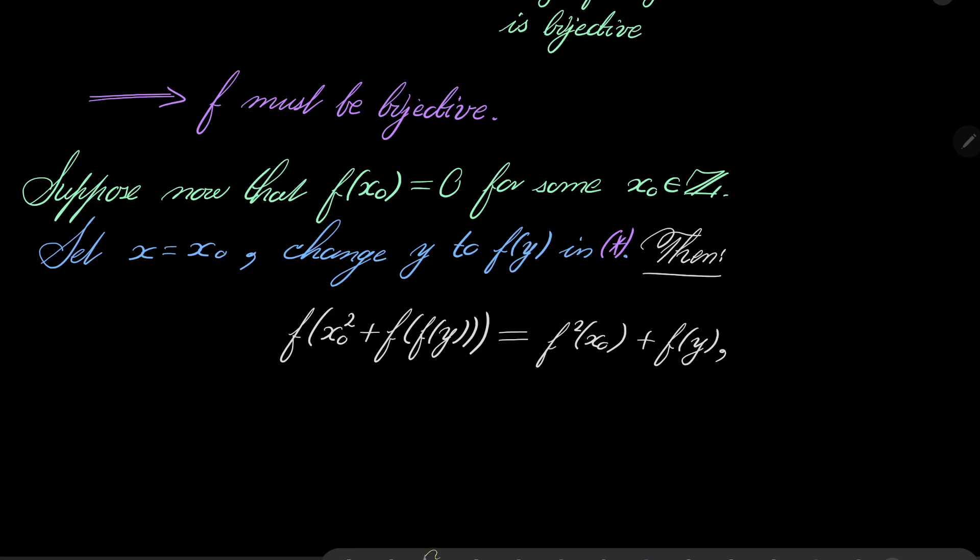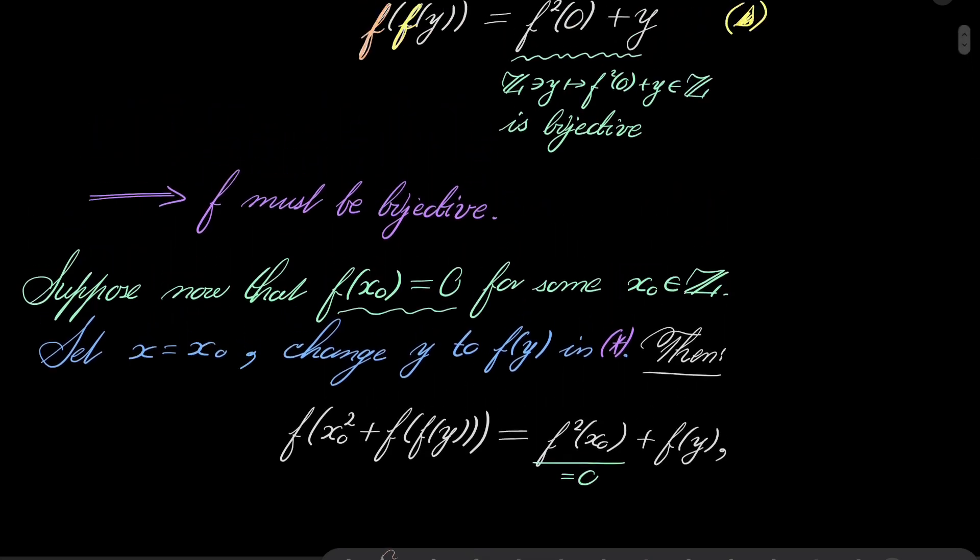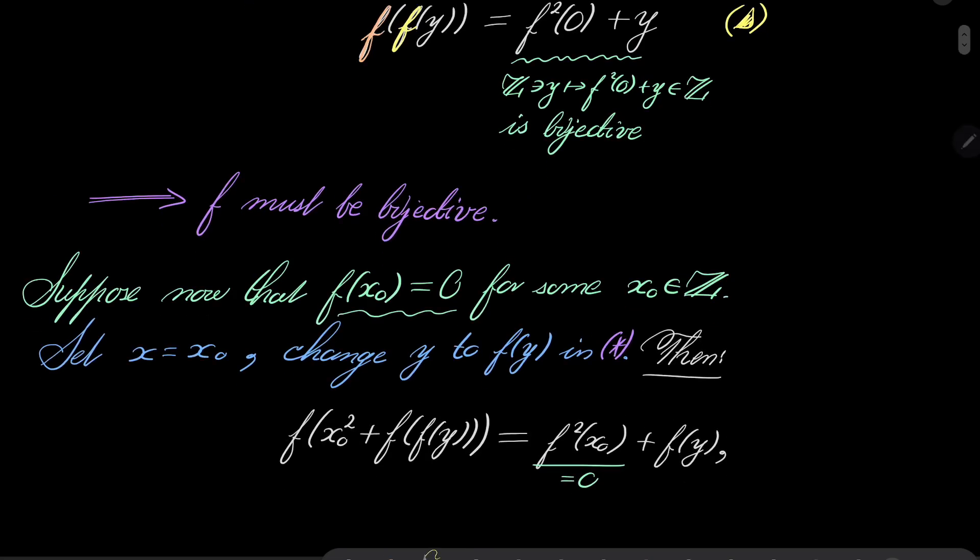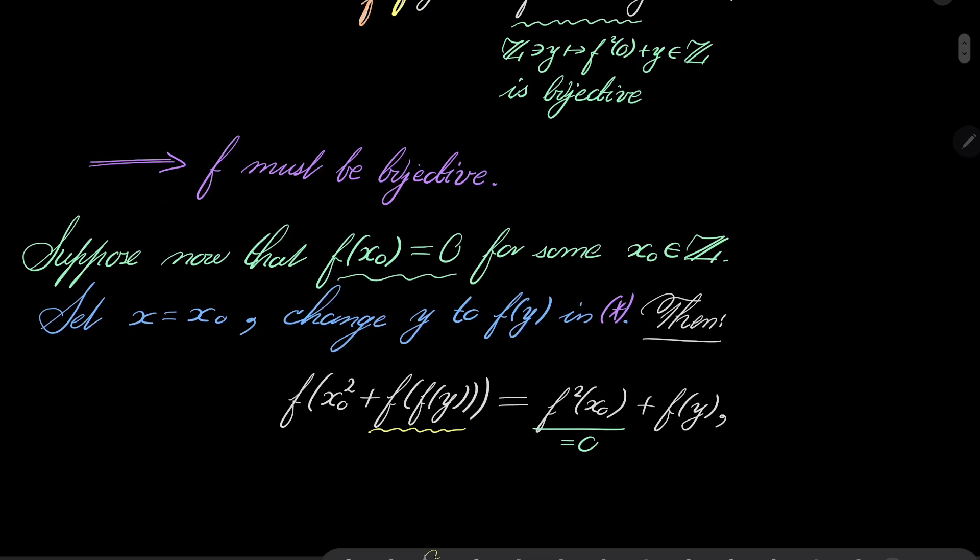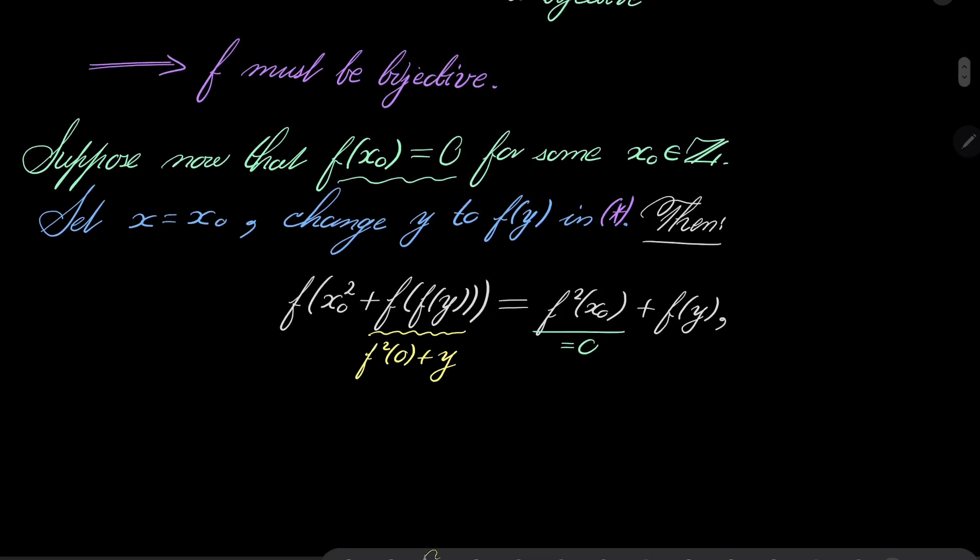Now let's take a look. First of all, since we assume that f of x0 is 0, this part disappears because it's 0. And what's more, what is f of f of y? By our condition triangle, f of f of y can be replaced by f squared of 0 plus y.